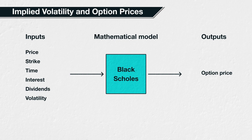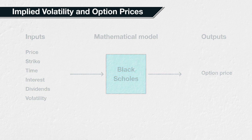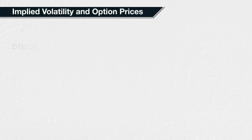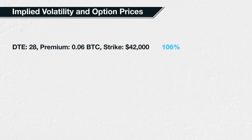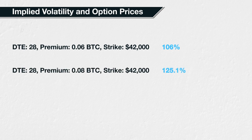If we change the option price, the related implied volatility will also change. For example, if we use the second call option that expires in 28 days, costs 0.06 Bitcoin, and has a strike price of $42,000 — if the price of the option were instead 0.08 Bitcoin, this would mean the implied volatility would be about 125.1%.